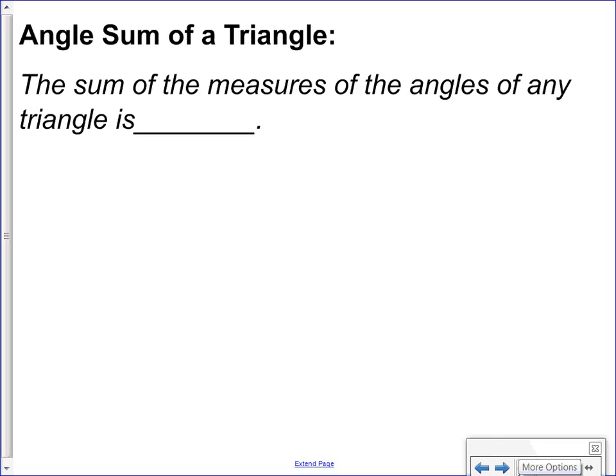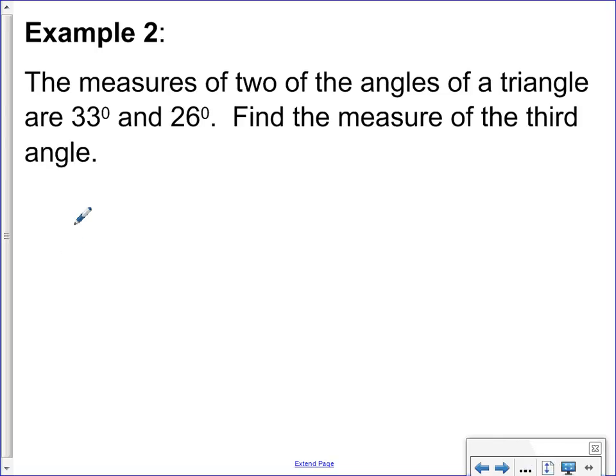In a triangle, all the angles add up to 180, always, always, always. So solving for the angles of the triangle is easy because it always adds up to 180, no more nor less. If two angles in a triangle are 33 and 26, how would you find the measure of the third angle? You can just add the two and then take it away from 180. So it'll just be 180 minus 33 plus 26 is 59.